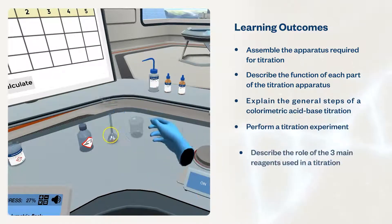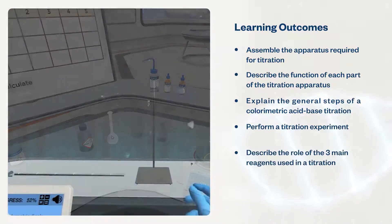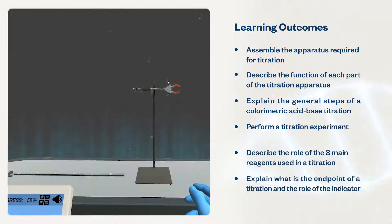Students will describe the role of the three main reagents used in a titration: sample, titrant, and indicator. They will explain what is the endpoint of a titration and the role of the indicator.